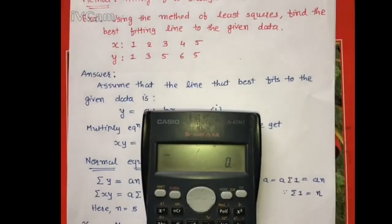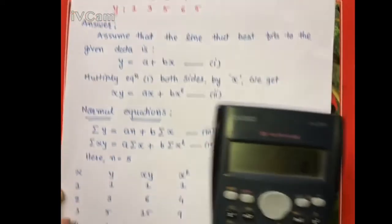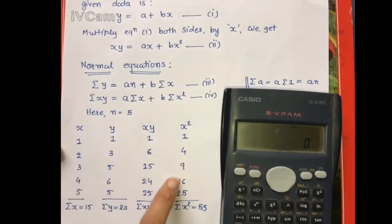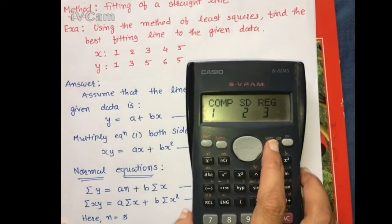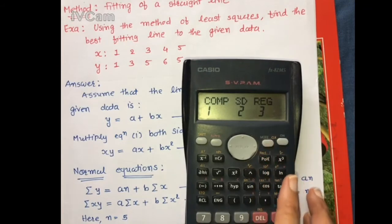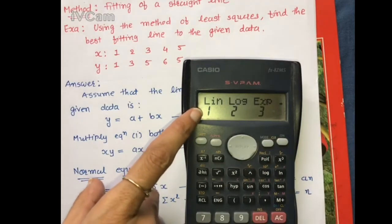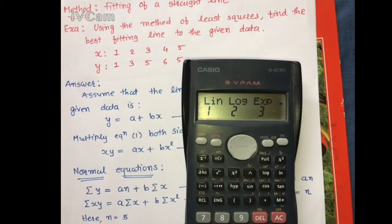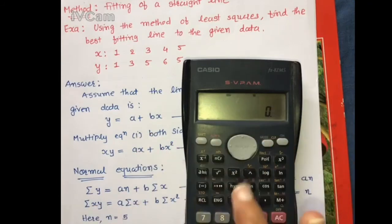Our x and y data are given. To input the data and find all summation values directly without making the table, press Mode and then press 3 for regression. Since we want to fit a line, put 1 for linear. Now the calculator is set to find all the summation values.